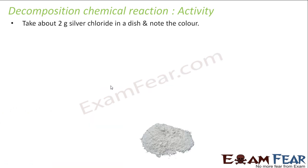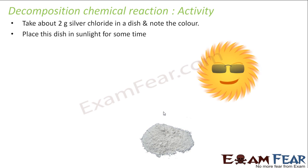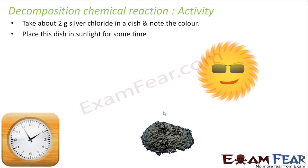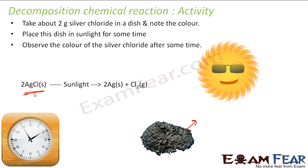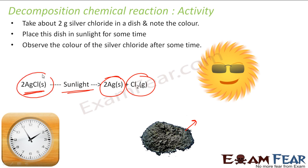For another activity, we take two grams of silver chloride and note its color, then put it in the sun for some time. After about one hour, we see the color changes from white to gray. This happened because silver chloride (AgCl) on exposure to sunlight broke into silver and chlorine gas — the gas evaporated. This compound broke into two smaller compounds, which is another example of a decomposition reaction.